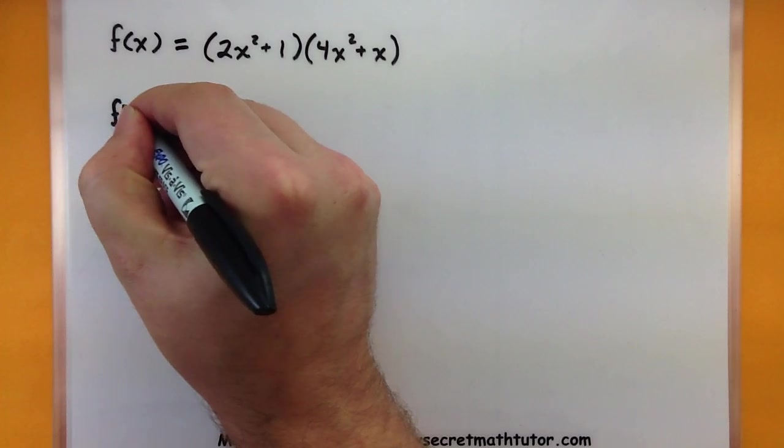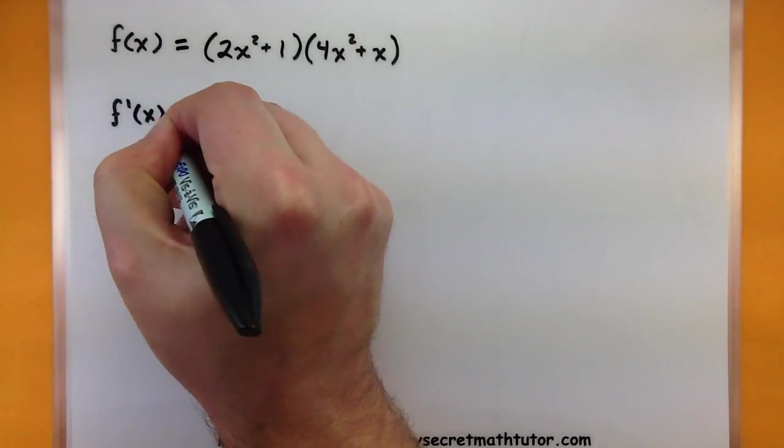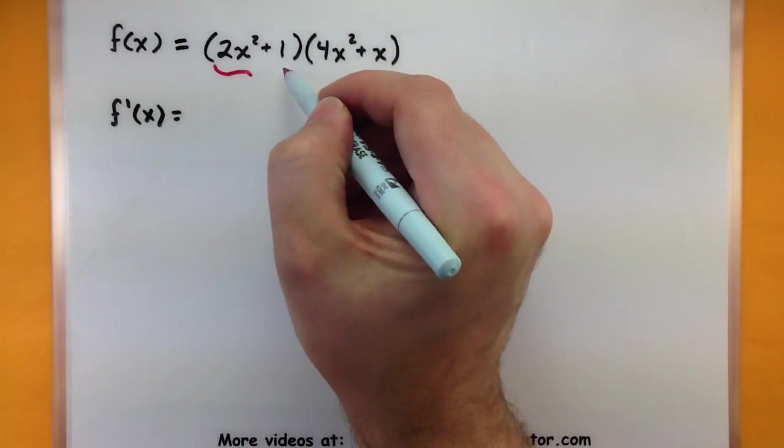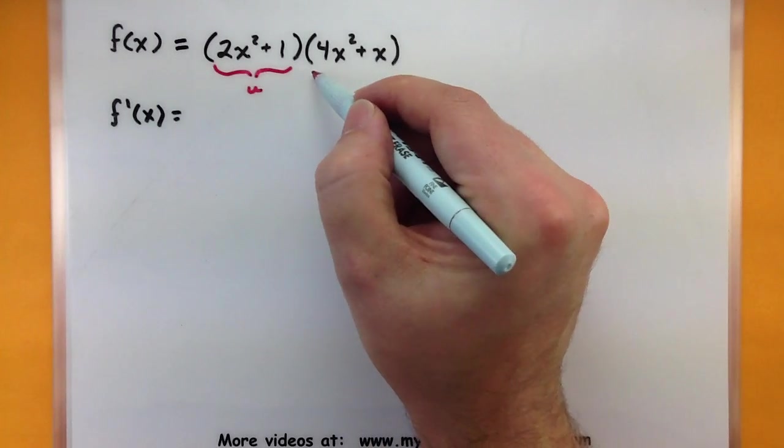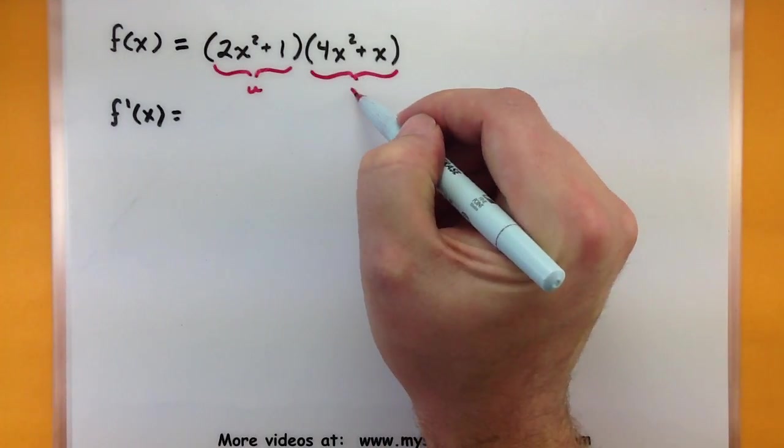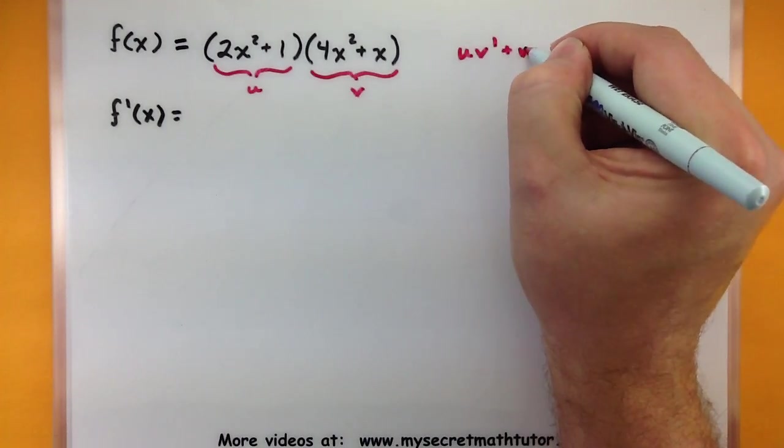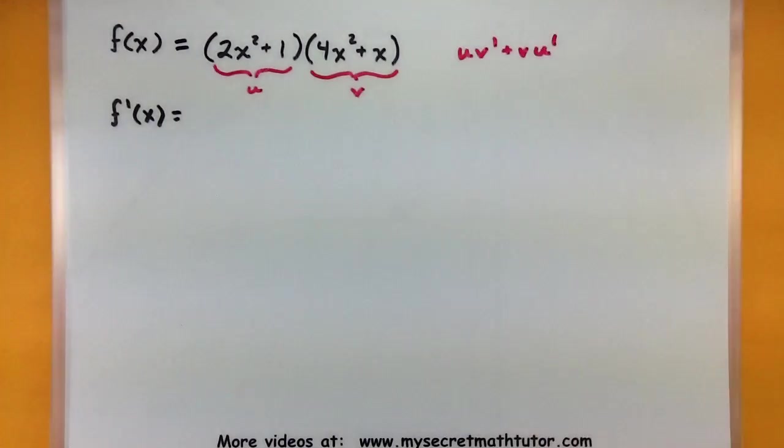So in order to do my first derivative, I recognize that I really have two functions in here. Maybe call the first one something. I'm going to call it u and call the second function something. Let's call that v. That way I can do my product rule. U v prime plus v u prime.